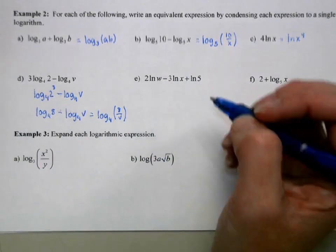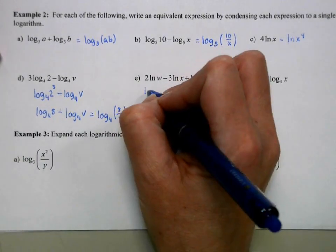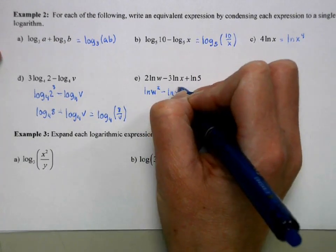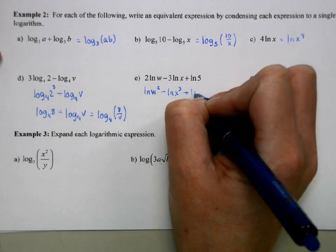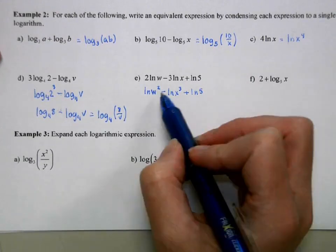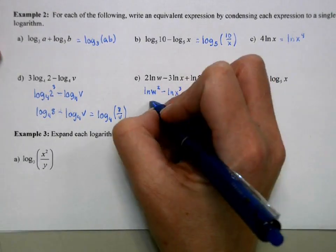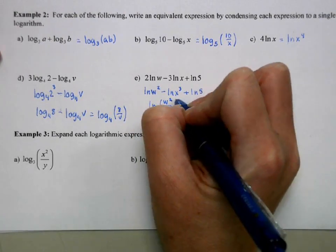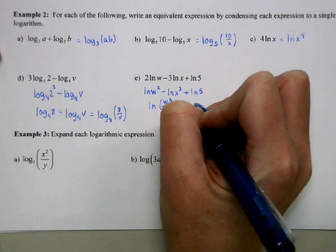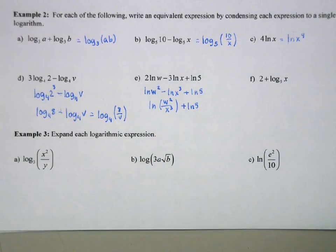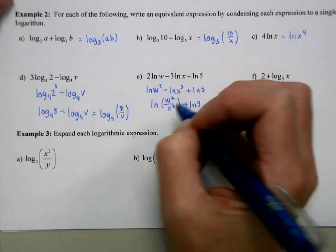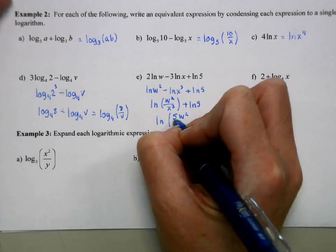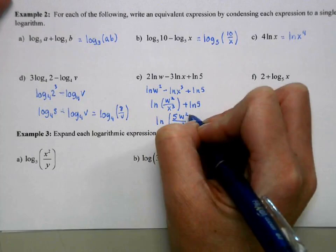Okay, so first I'll deal with those exponents. So natural log w squared minus natural log x cubed plus natural log of 5. Okay, then I'm going to combine these two. So that'll be natural log w squared over x cubed. And finally, we're going to have the product property. So I'm multiplying these two things together. So I can write that as natural log 5 w squared over x cubed as a single log.